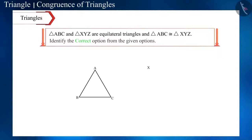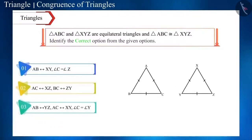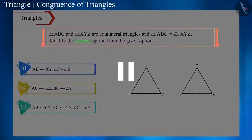Triangle ABC and triangle XYZ are equilateral triangles and are also congruent to each other. Now, can you tell which of the given options is correct? You can also pause the video to think about the answer to this question.